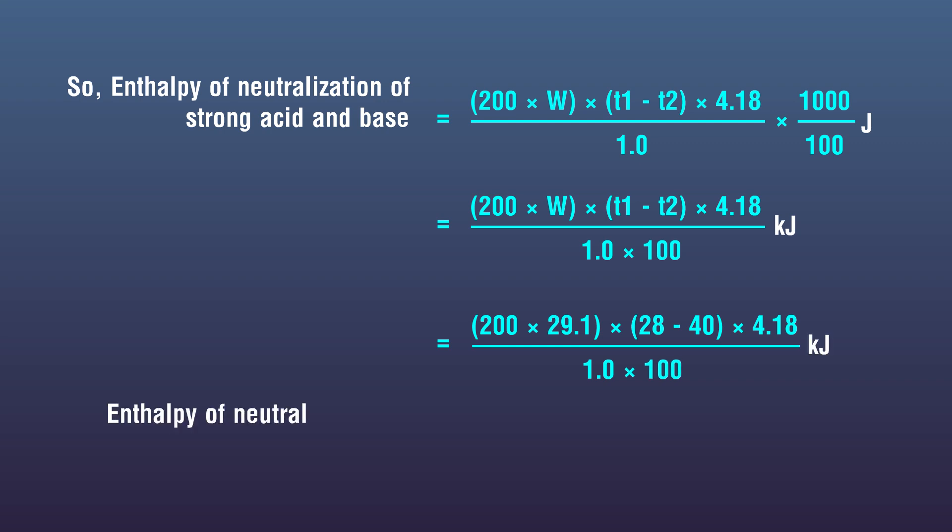Enthalpy of neutralization of strong acid and base equals negative 2,919.32 kilojoules. Result: Enthalpy change in neutralizing strong acid hydrochloric acid with base sodium hydroxide is negative 2,919 kilojoules per mole.